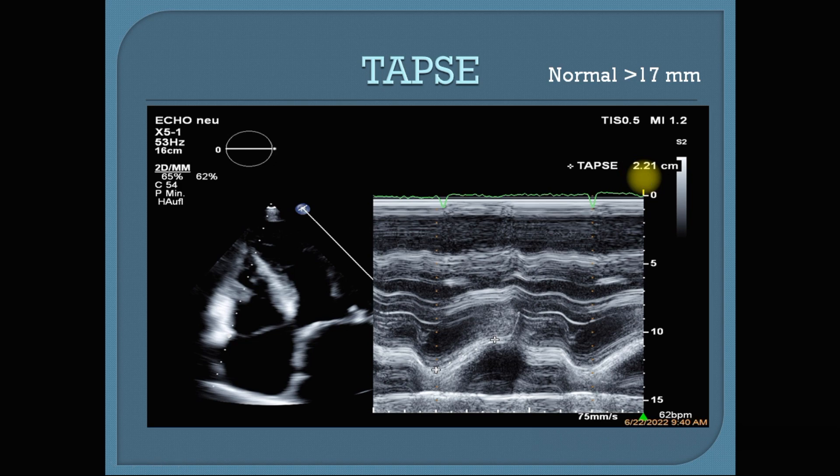The normal value of TAPSE is more than 17 millimeters — above 17 is normal, below is abnormal. From 17 to 13 is mildly reduced. From 13 to 10 is moderately reduced. Less than 10 is severely reduced. Never forget: TAPSE is normally more than 17 millimeters.